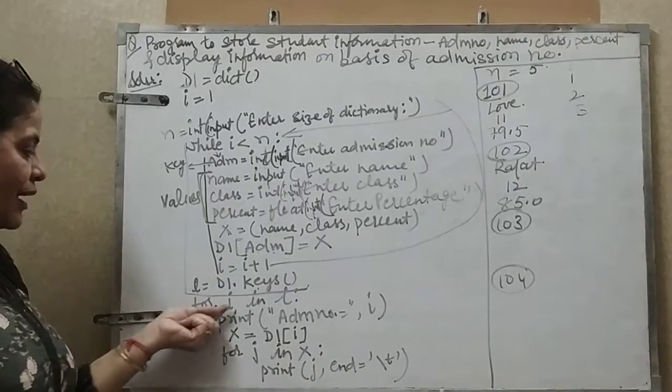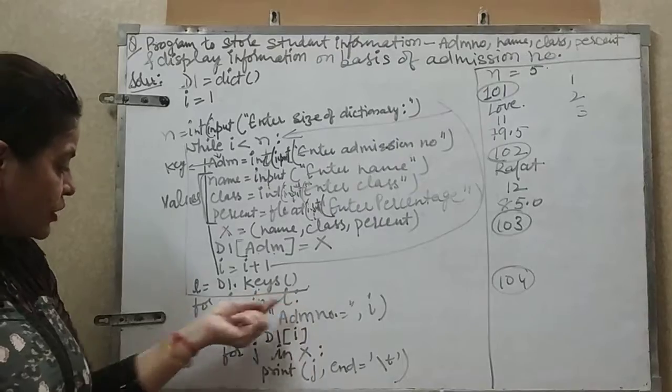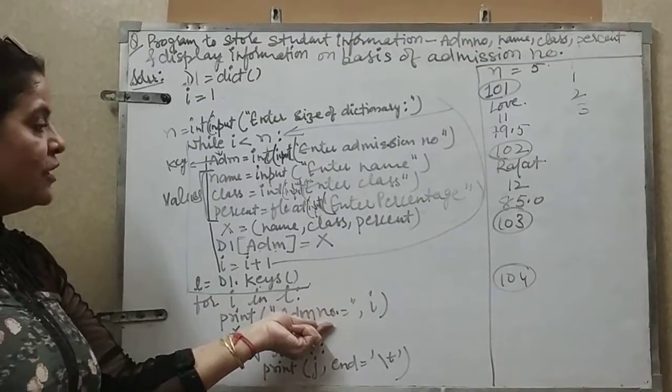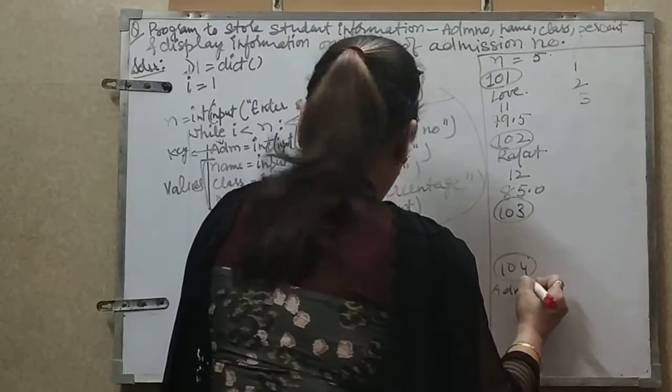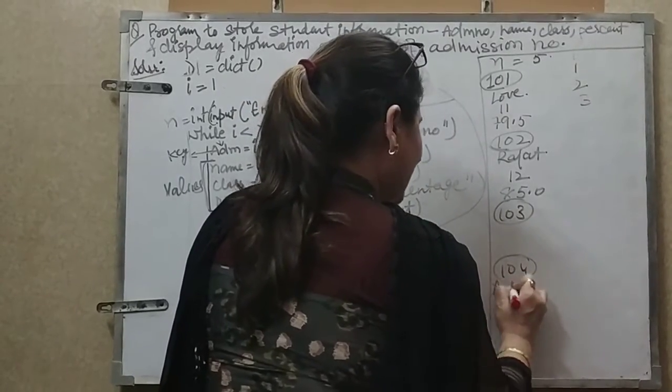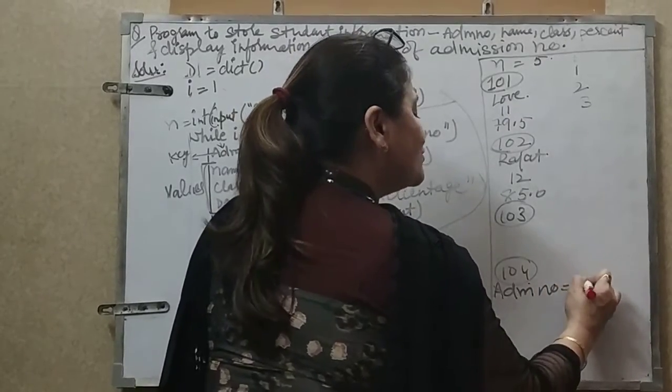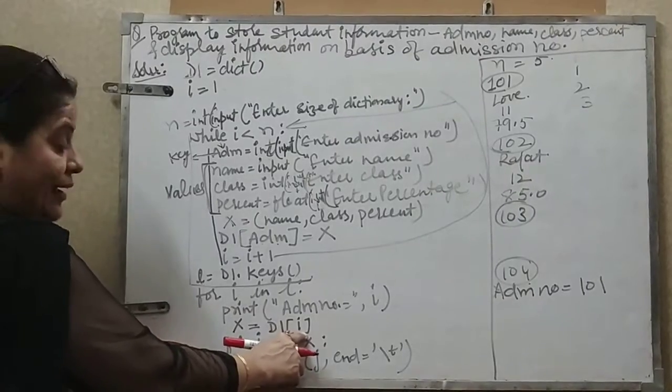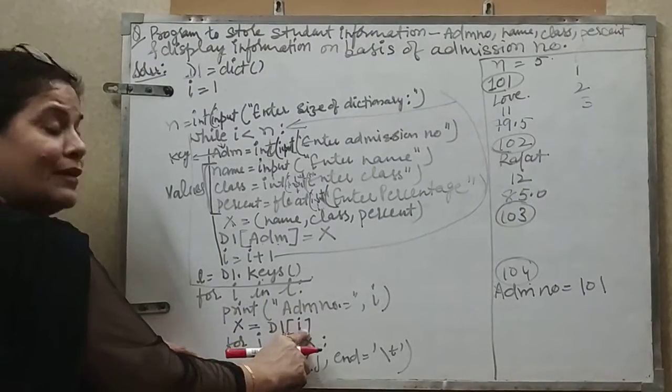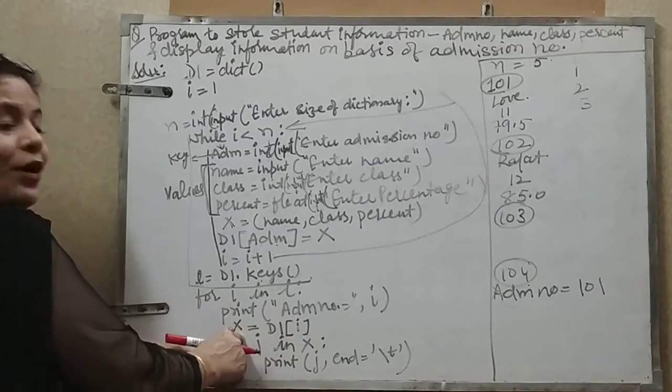So if I say for i in L, it means one by one each key will come. For that key I have to print that key number. If I print admission number is A D M N O equals 101, then after that I have written X equals D1 of i. X equals D1 of i means this key, whatever values I have in dictionary, they will go to X.